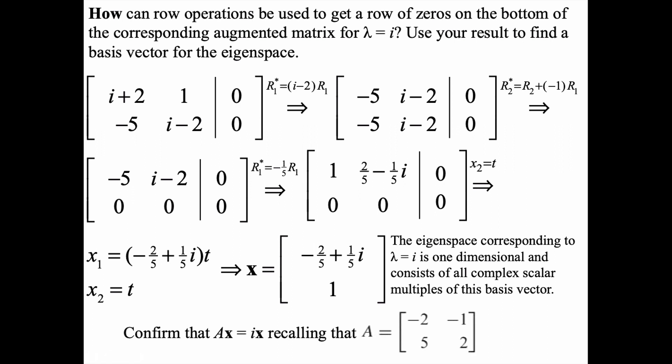We could confirm our result. We know how eigenvalues and eigenvectors work. The matrix A times x vector should result in the eigenvalue, which was complex in this case, i times x vector.